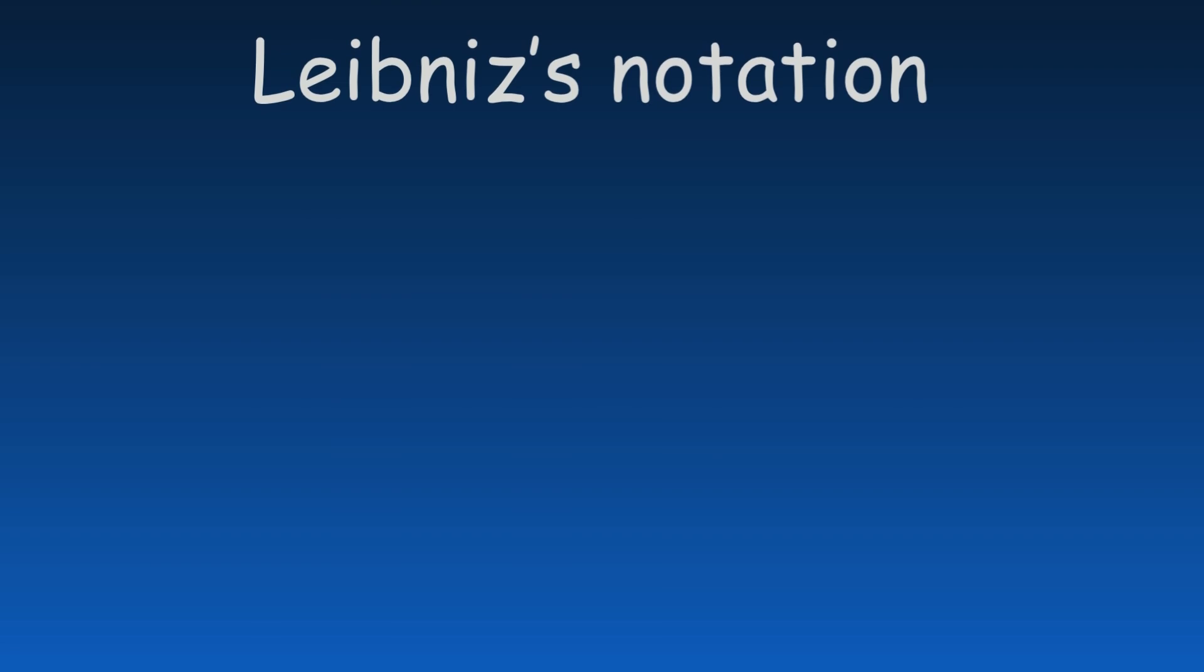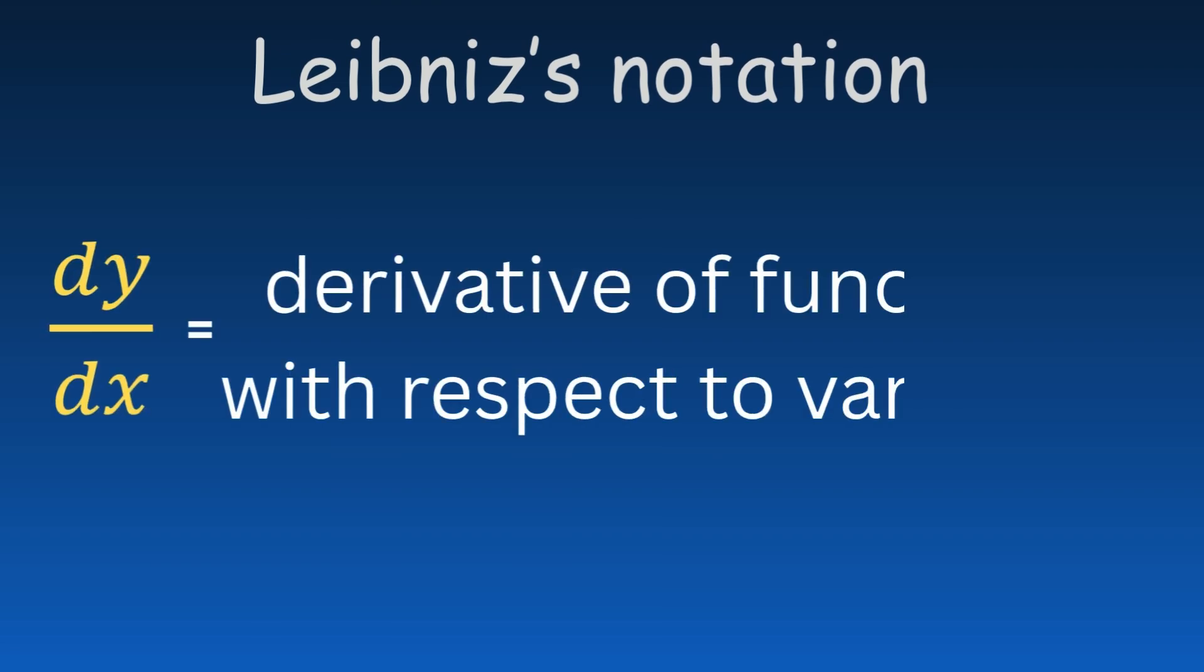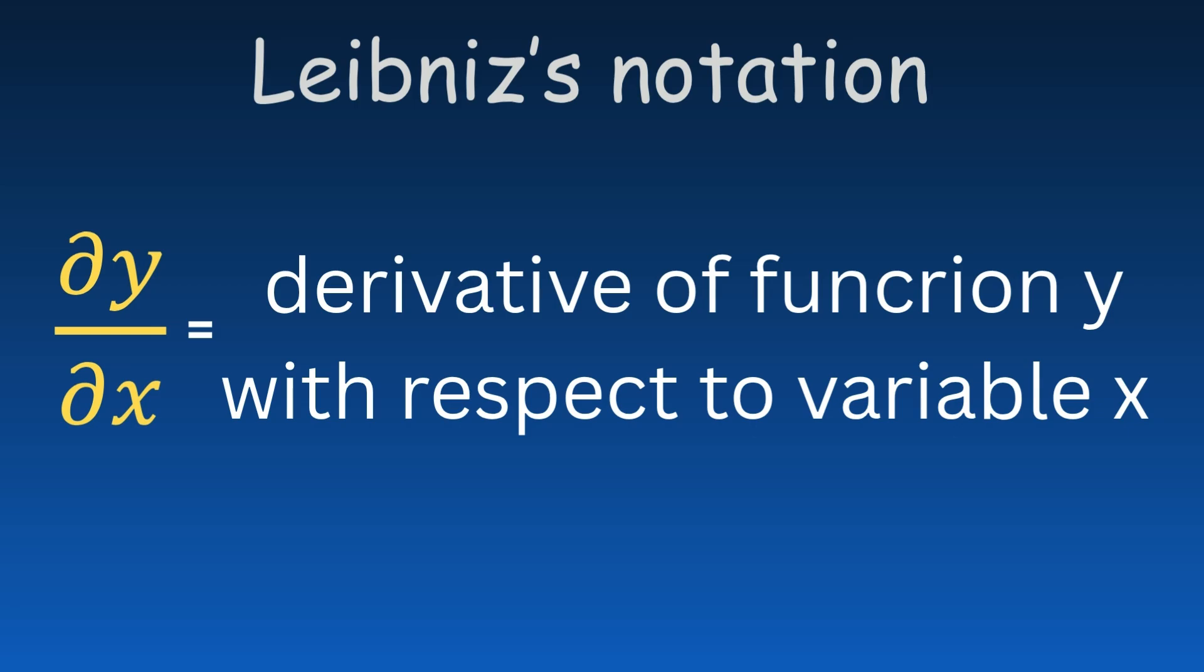Leibniz's notation expresses the derivative as a fraction, with the function or variable on top and the variable it's differentiated with respect to at the bottom. If the d in Leibniz's notation is rounded, it signifies a partial derivative, which applies when dealing with functions of multiple variables.